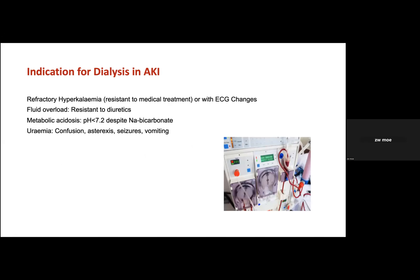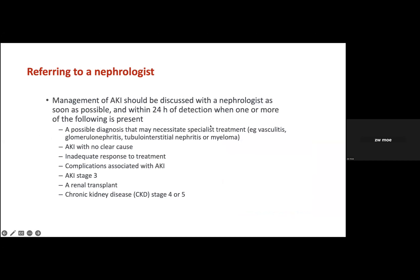Complications of AKI include hyperkalaemia, fluid overload, uraemic encephalopathy, and pericarditis — these are also important indications for dialysis. Indications for dialysis are refractory hyperkalaemia not responding to management, fluid overload, metabolic acidosis, and uraemic symptoms such as confusion, seizure, and vomiting. Refer to the nephrologist early, especially in transplant patients, as the renal team needs to adjust medication doses, monitor transplant function, and consider transplant biopsy to exclude rejection.